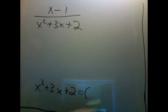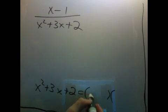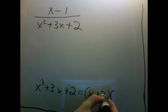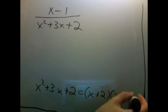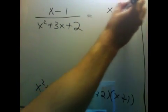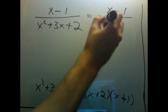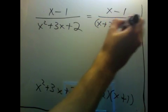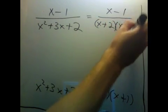This factors pretty nicely into x plus 2 times x plus 1. So this thing we started with is x minus 1 divided by x plus 2 times x plus 1.